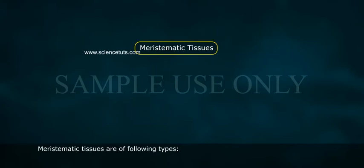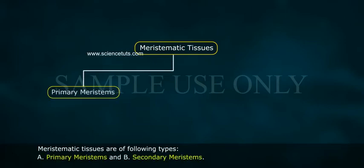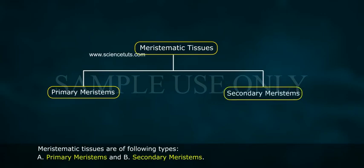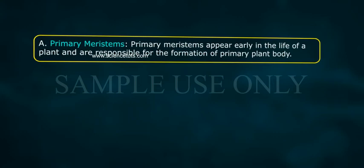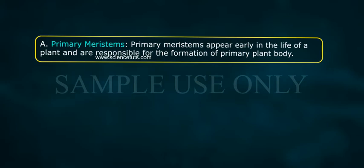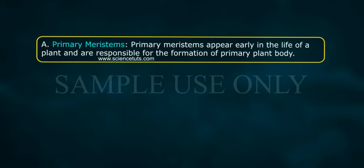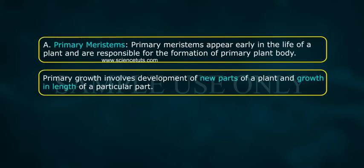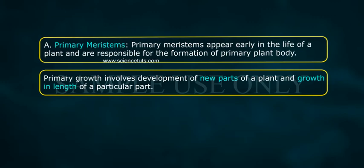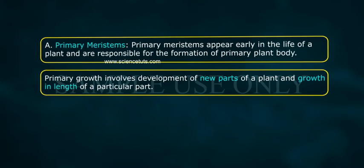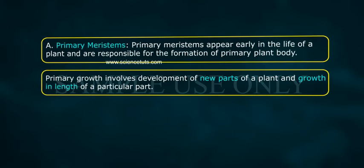Meristematic tissues are of the following types: A. Primary meristems and B. Secondary meristems. Primary meristems appear early in the life of a plant and are responsible for the formation of the primary plant body. Primary growth involves development of new parts of a plant and growth in length of a particular part.